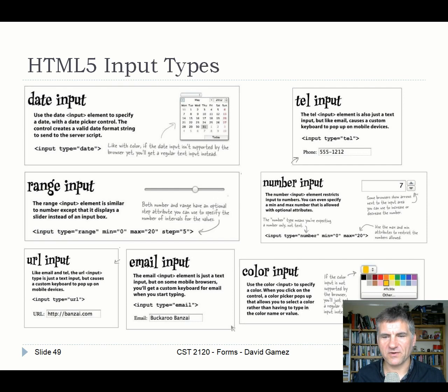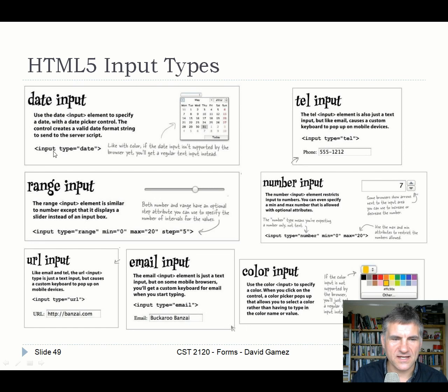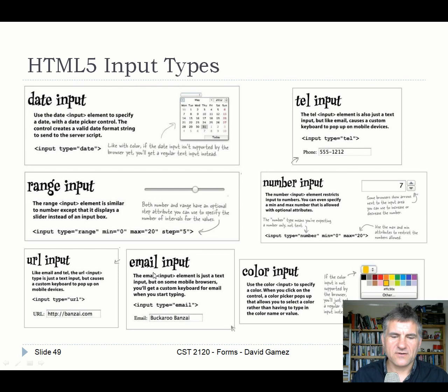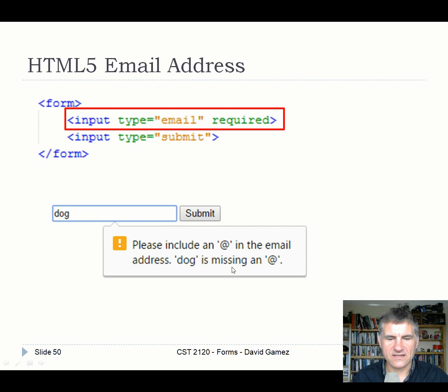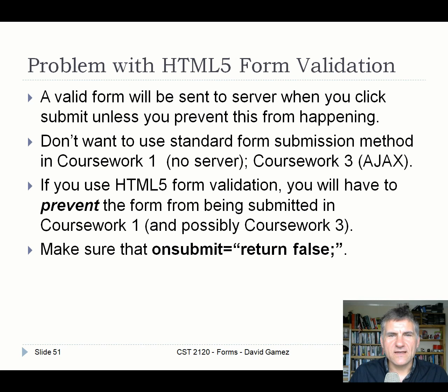HTML5 input types help in two ways: the widget constrains what users can enter — a date picker gives the exact format you want rather than free text where users might use different date formats — and they run rudimentary checks. For example, entering 'dog' in an email field and clicking submit will say 'please include an @ sign'. These checks aren't perfect but are a reasonable first layer.